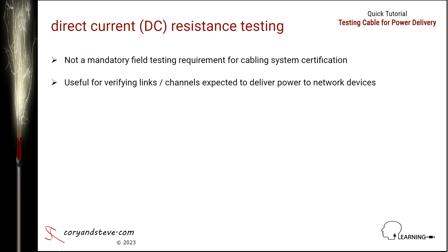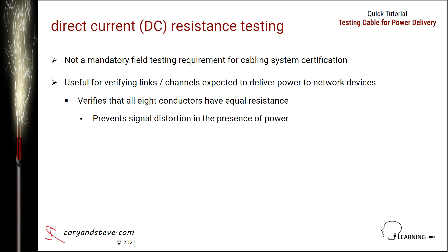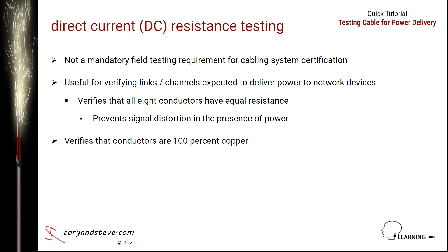DC resistance testing verifies that the eight conductors that make up the four twisted pairs in a cable have an equal or nearly equal amount of resistance. An excessive difference between the DC resistance values of the two conductors in any pair, or between any of the four pairs, can result in communication delays or link failure due to data corruption caused by signal distortions. As an added bonus, this type of testing will also verify the metallic composition of the conductors and identify any non-code-compliant or counterfeit cable construction, such as copper-coated aluminum cables advertised as 100% copper.